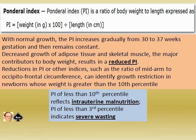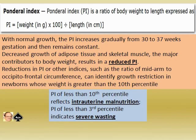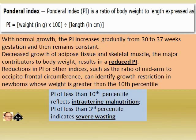Reduction in PI, or other indices such as the ratio of mid-arm to occipitofrontal circumference, can identify growth restriction in newborns whose weight is greater than the 10th centile. A PI of less than the 10th centile reflects intrauterine malnutrition. A PI of less than the 3rd centile indicates severe wasting.